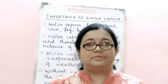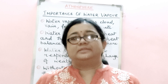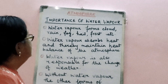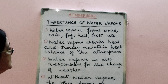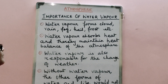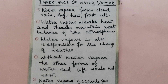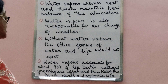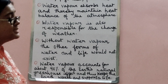Water vapor is one of the most important elements of the Earth's atmosphere — it is the gaseous state of water. The importance of water vapor is enormous. First, water vapor forms clouds, rain, fog, hail, frost, etc. Second, water vapor absorbs heat and thereby maintains the heat balance of the atmosphere. Third, water vapor is responsible for changes in weather. Fourth, without water vapor, other forms of water and life would not exist. Finally, water vapor accounts for about 90 percent of the Earth's natural greenhouse effect, keeping the Earth warm and supporting life.